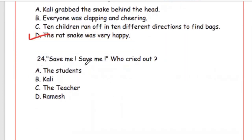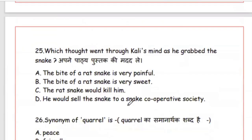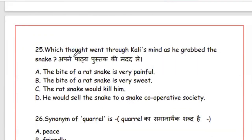Question 24: 'Save me, save me!' — Who cried out? Options: the students, Kali, the teacher, Amish. Answer is Option C, the teacher — teacher chilla rahe the. Question 25: Which thought went through Kali's mind as he grabbed the snake? Options: the bite of a rat snake is very painful; the bite is very sweet; the rat snake would kill him; he would sell the snake to a cooperative. The right option is Option A — the bite of a rat snake is very painful.